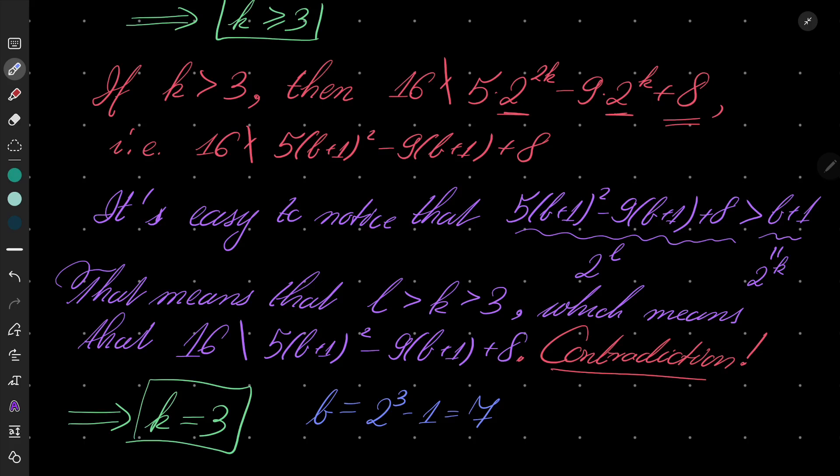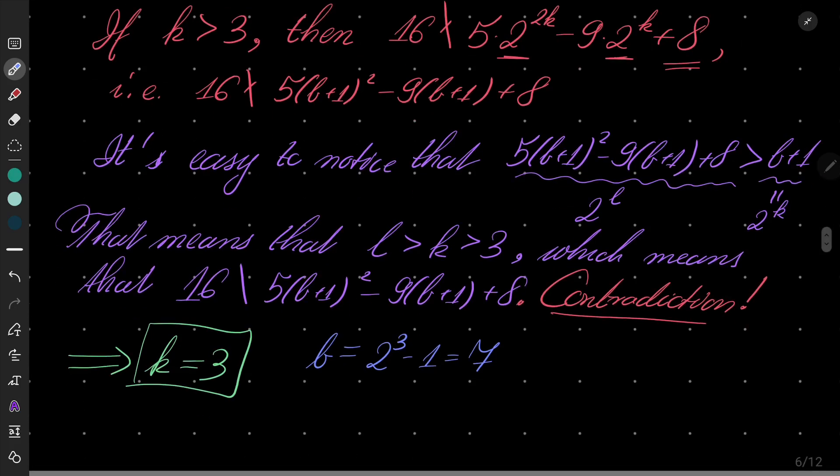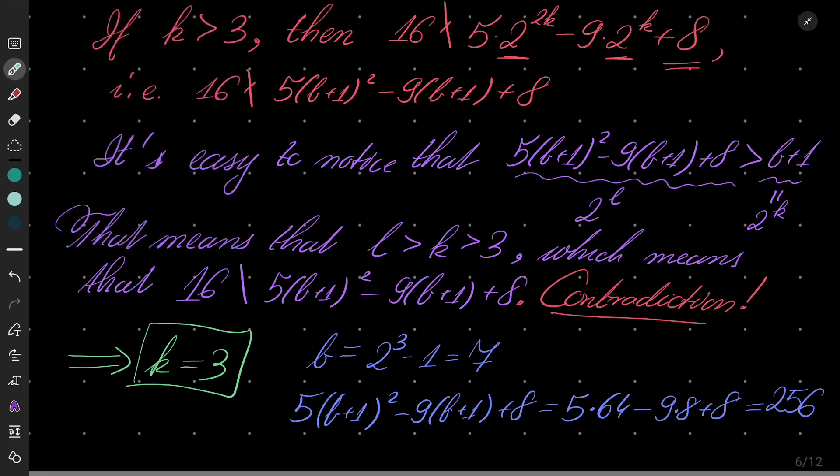Let's also check the second part. What is 5(B+1)² - 9(B+1) + 8? Well, that's just 5 times 64 minus 9 times 8 plus 8. That should be, let me take a look, yes, 256. It is a power of 2, so we have our result: B must equal 7, and that is the only solution.